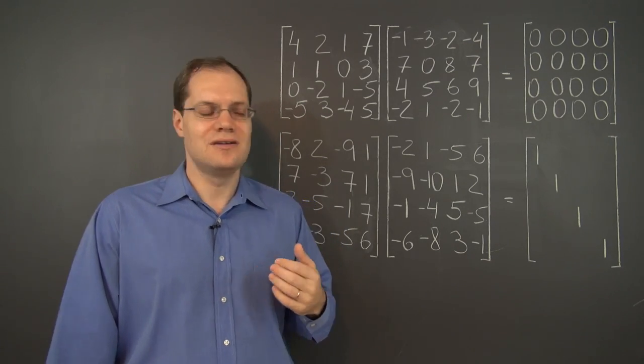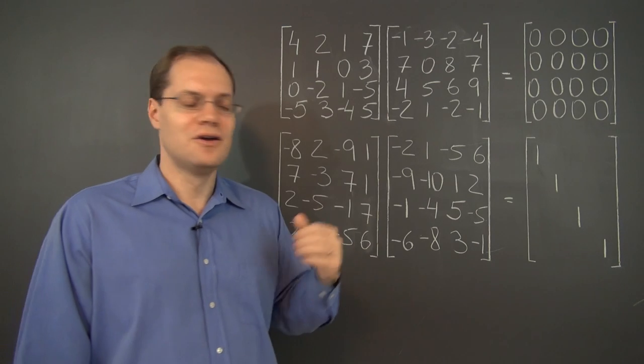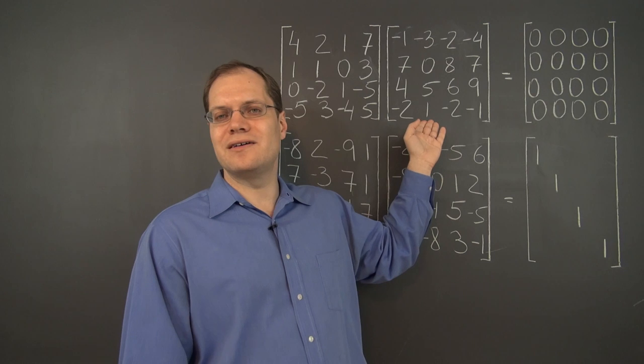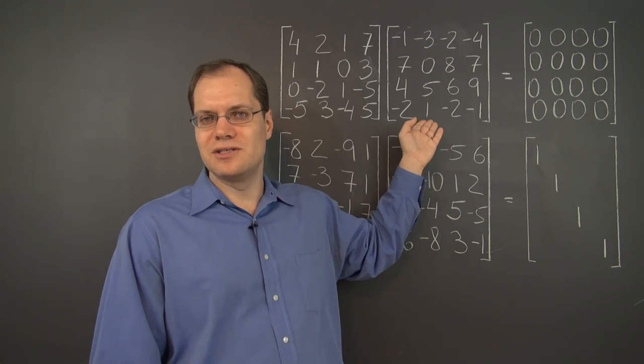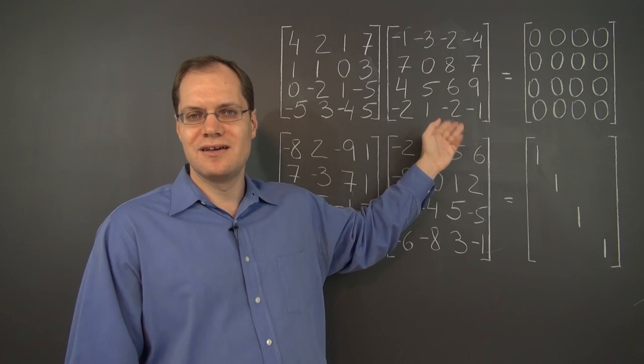Then you'll know the null space of this matrix. It'll be at least two-dimensional. So then you'll take the basis of the null space, which you don't even have to calculate because you know what it is having created this matrix. And start throwing various linear combinations of those elements of the null space into this matrix. And there you go.